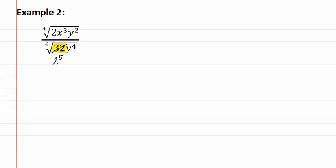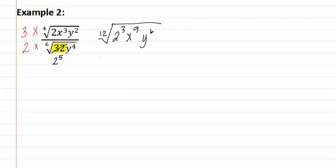Now let's continue by finding a common index. We are going to multiply the top by 3 and the bottom by 2 to give us a common index of twelve. We will now have the twelfth root of 2 to the third, x to the ninth, and y to the sixth. Remember when we multiply, we not only multiply by the index, but all of the exponents as well. In the denominator, we have the twelfth root of 2 to the tenth, y to the eighth.